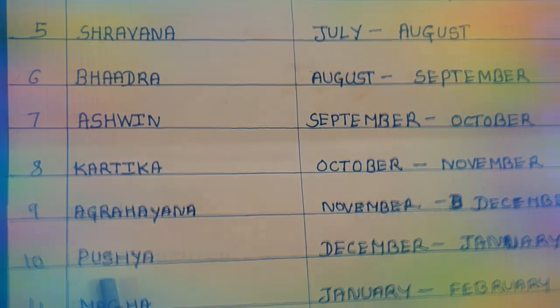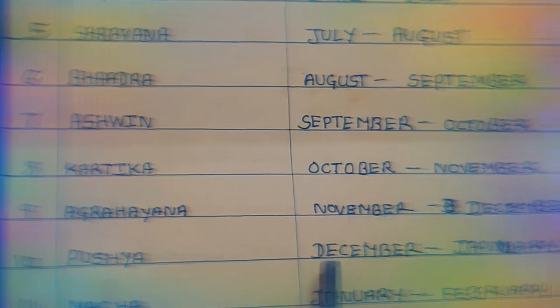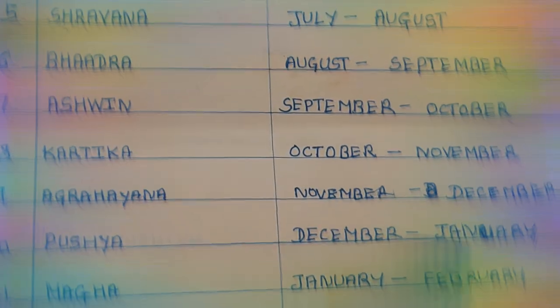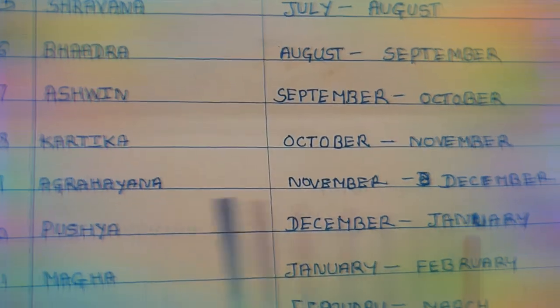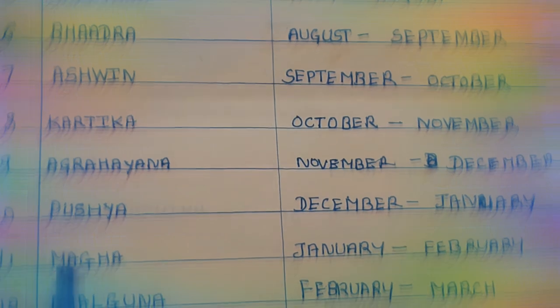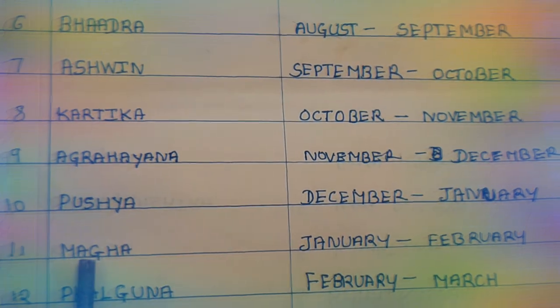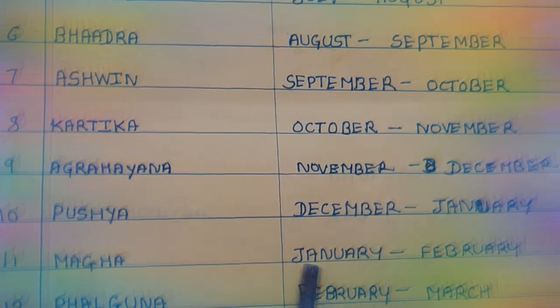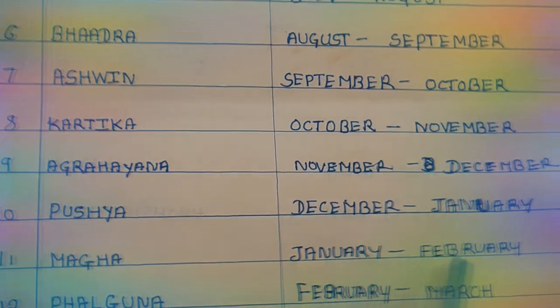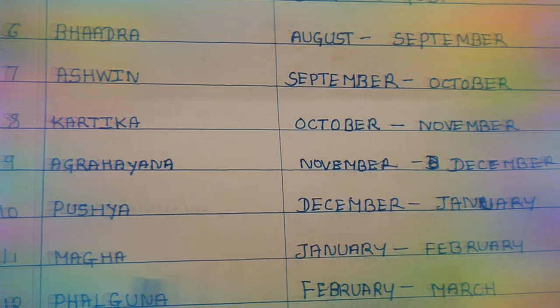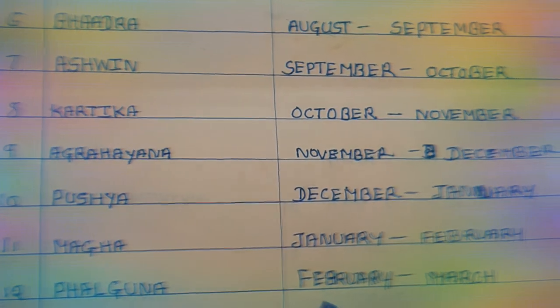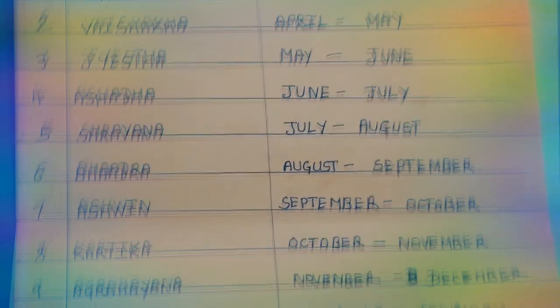Pausha: December to January. Magha: January to February. Falguna: February to March. Thank you for watching.